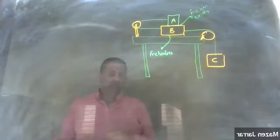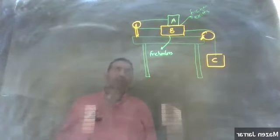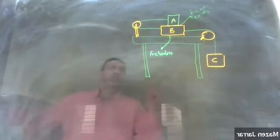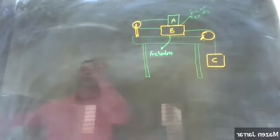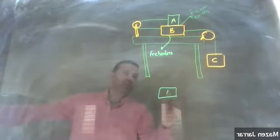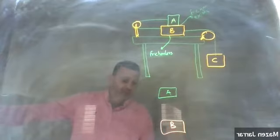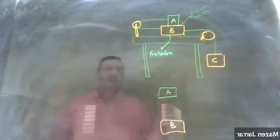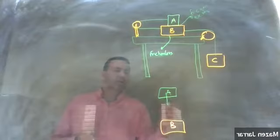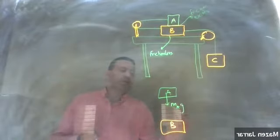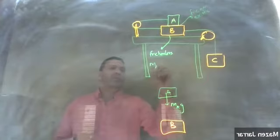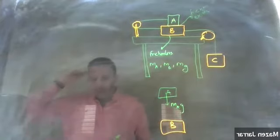Part A asks us to draw free body force diagrams for both object A and object B. Let's do the free body force diagram for object A first. A is being pulled by gravity, so we have a gravitational force mg acting downward, where masses mA, mB, and mC are given.